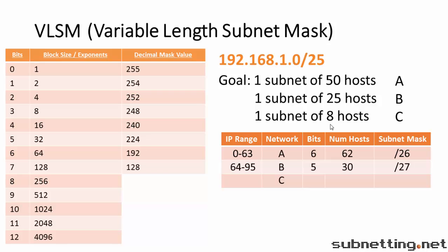Our last network requires 8 hosts. We're going to add 2, that's 10. The lowest power of 2 that is greater than or equal to 10 is 16. This is why we had to add 2, because otherwise you might have chosen 8. 16 means we need 4 bits. We're going to have 16 addresses, so it goes from 96 to 111. So this IP range goes from 96 to 111. The number of hosts we can handle is 14. And our subnet mask will be slash 28.